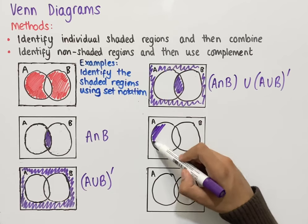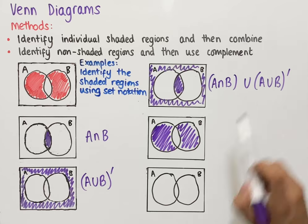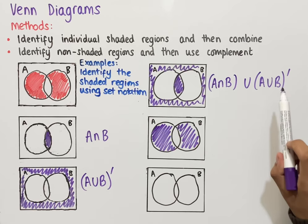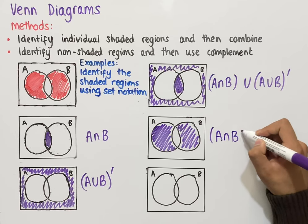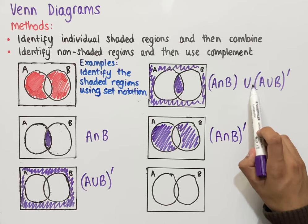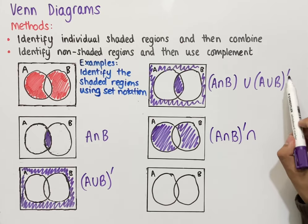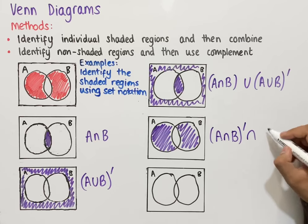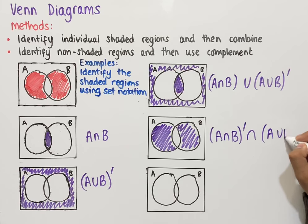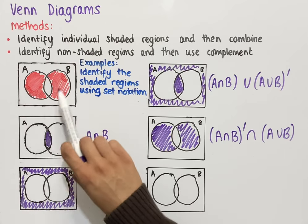To get the red shaded region in the question, we apply complement to all of this. Applying De Morgan's law, the complement of the first bracket (A intersect B) becomes A intersect B complement; the union symbol switches to intersection; and the complement of (A union B) complement is simply A union B. So one way of writing the set notation is: (A intersect B) complement intersect (A union B).